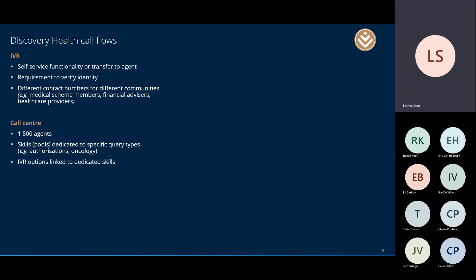Our call center has about 1,500 agents, all divided into skills or pools dedicated to specific query types. We have a pool of authorizations agents trained to deal with authorization queries, and many different skills or pools. The purpose of the IVR is to direct members to the correct pool. The need for an efficient IVR is quite intuitive, but with our emphasis on member experience we want the journey to be as smooth and fast as possible.